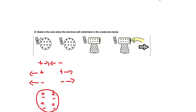But when this positive item is brought near, notice it's not touching. The electrons because it's a conductor they can move. They'll move over. So they're all going to go this way.